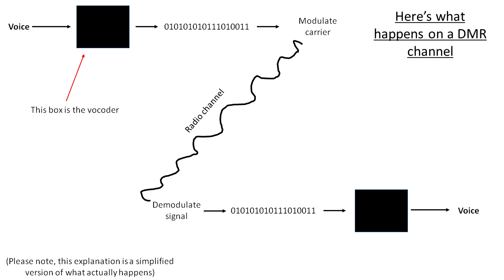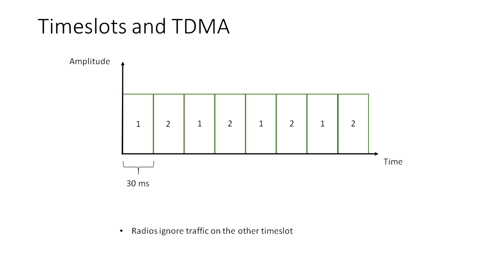The benefit of using a vocoder is that the voice takes up less data. So instead of requiring one whole 12.5kHz channel, it might only require half of that to send the voice. This is exactly the case in DMR — it splits a channel into two time slots. This is called TDMA, which stands for Time Division Multiple Access. The channel is split into alternating 30ms slots. A radio will transmit for 30ms and then not transmit for the next 30ms, and so on. The user doesn't notice this because enough data representing their voice is compressed into one time slot — it takes 60ms of voice and compresses it to send in 30ms. A DMR radio will only listen to traffic on the time slot it is programmed to use on any particular channel, and will ignore traffic on the other time slot, essentially treating it as a completely separate channel.